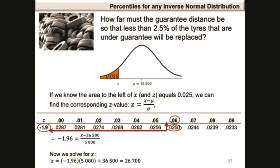Solving for x, we find that minus 1.96 equals x minus 36,500 divided by 5,000. So x equals minus 1.96 times 5,000 plus 36,500, and our final x-value is 26,700.